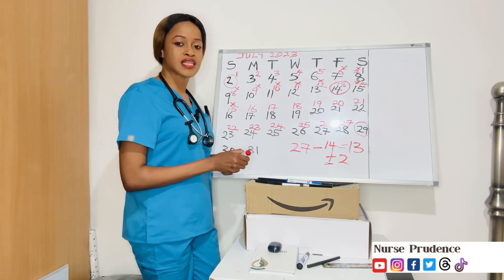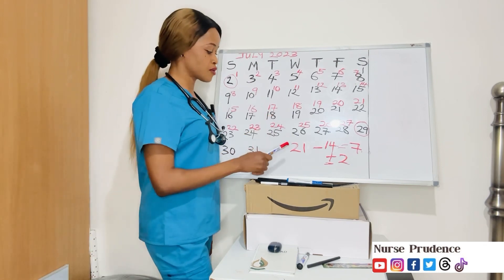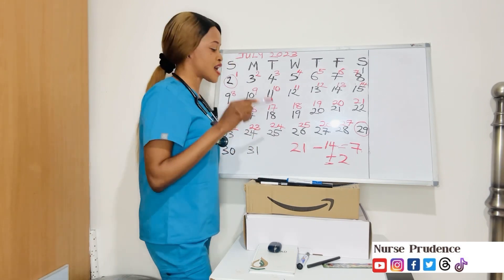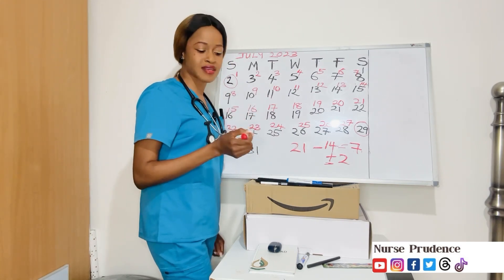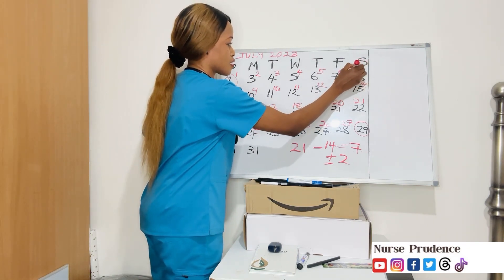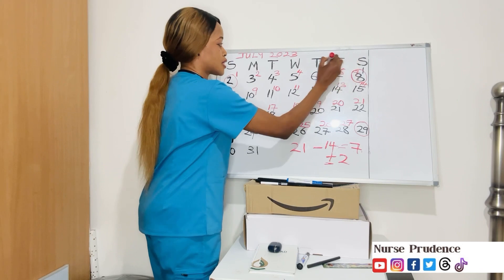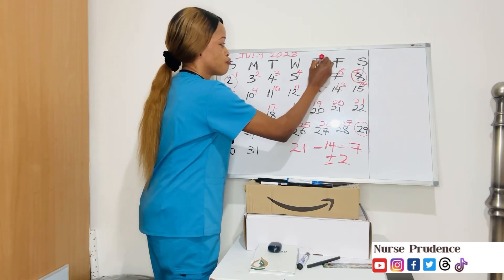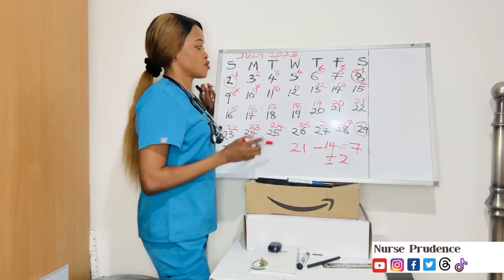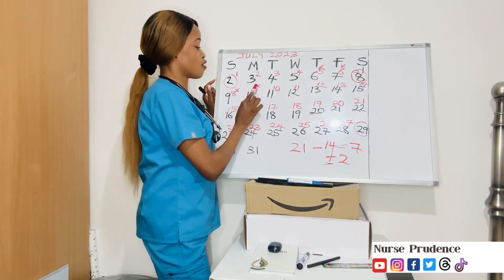Let me do another example with a 21-day average cycle length. When you subtract 14 from 21, you get 7 — meaning she is expected to ovulate on the 7th day of her cycle. With plus or minus two days, she may ovulate on the 5th, 6th, 8th, or 9th day of her cycle.